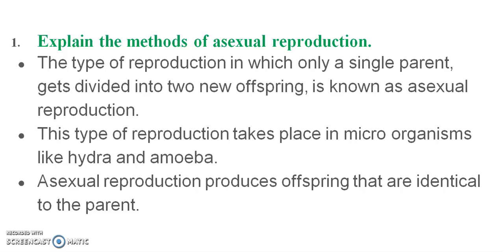Regarding asexual reproduction methods: a single parent gets divided into two new offspring. This is the main process in binary fission.